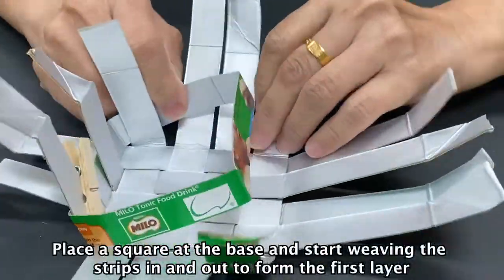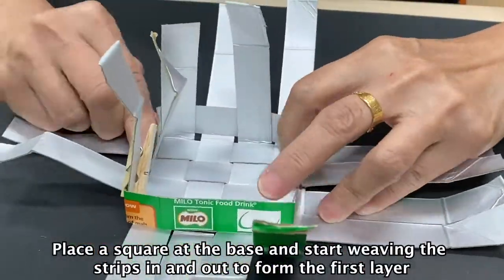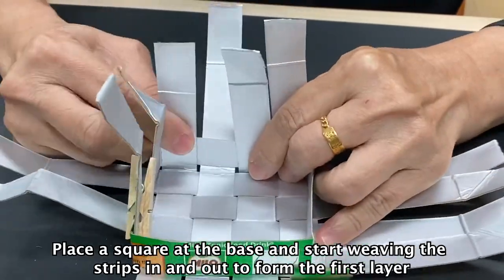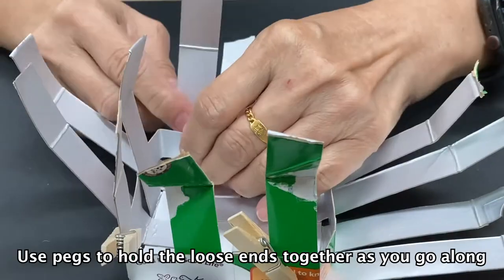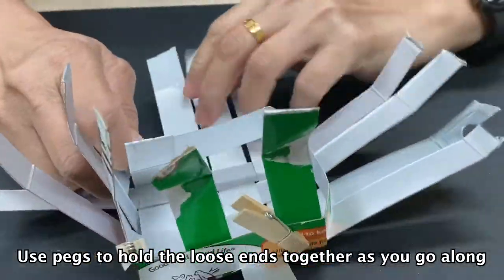Place a square at the base and start weaving the strips in and out to form the first layer. Use pegs to hold the loose ends together as you go along.